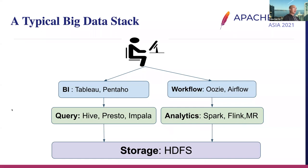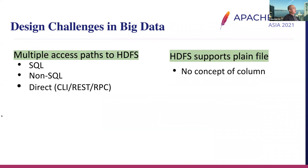Now let's drill into more details of column encryption use cases and implementation. This is a typical big data stack. Data users and owners sit on top, running business intelligence queries and machine learning use cases. In the middle are different query engines — Hive, Presto, Spark, and applications. Storage sits at the bottom, HDFS or file system. A bigger design challenge in big data, particularly for column encryption, is supporting multiple access paths to HDFS — SQL queries, non-SQL, direct from CLI, and RPC calls. HDFS supports plain files, so there is no concept of a column.